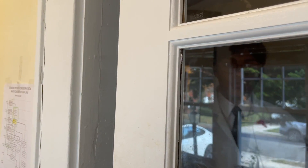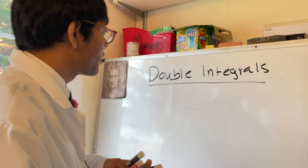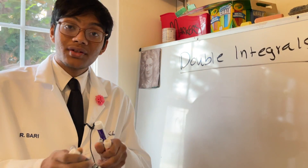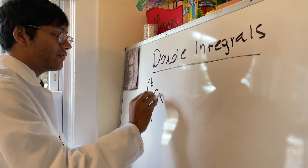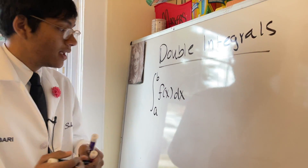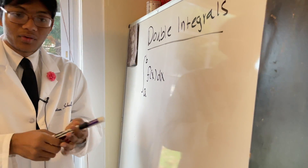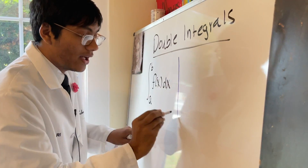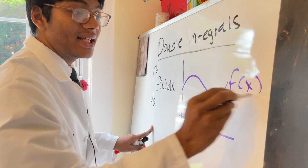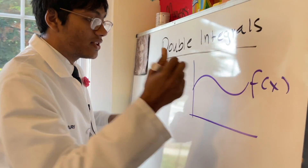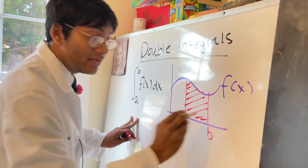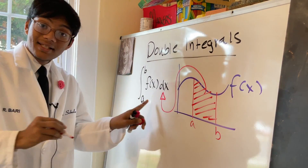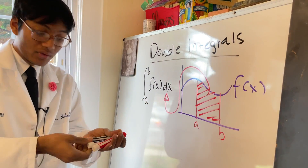All right folks, let's check out a double integrals problem. First we have to understand what double integrals actually are. To do that, we need to understand what single integrals are. Single integrals look like this: the integral from a to b of a certain function with respect to a certain variable. This integral answers the question: if you have a function f of x, what is the area of this function over the interval from a to b?